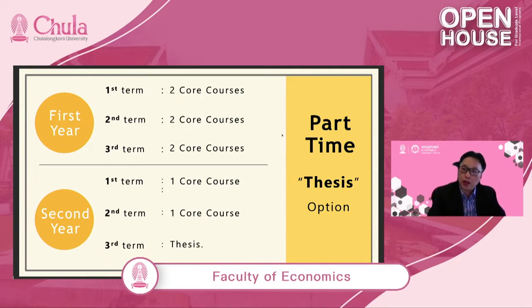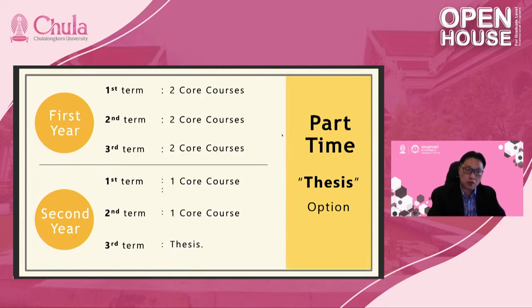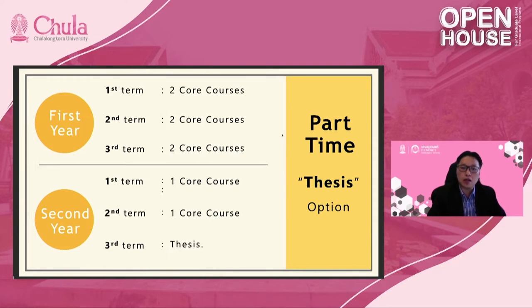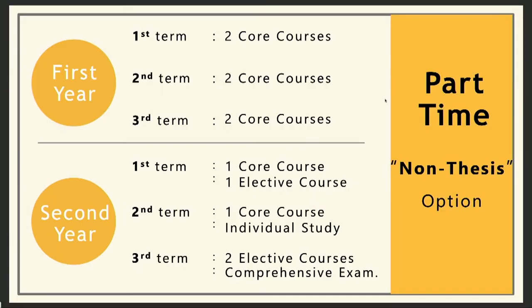For part-time students, the thesis option is a two-year program. In the first year, students take six core courses across the year. In the second year first term, students take one more core course, and in the third term they work on their thesis. For the part-time non-thesis option, the first year covers six core courses across three terms. In the second year, students take one core course, one elective course, another core course, and then individual study in first term; then two elective courses in the third term, plus students must pass the comprehensive exam.